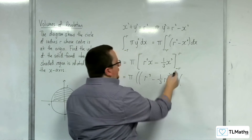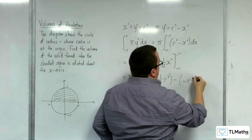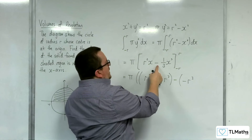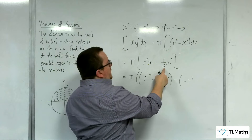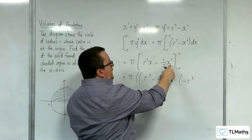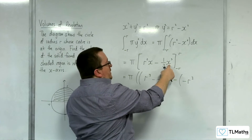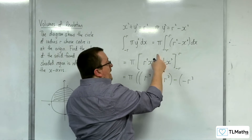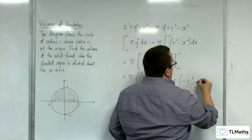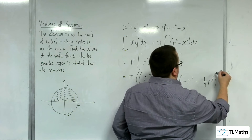Now substituting the lower limit minus r, we get minus r cubed, minus one third times minus r all cubed. Since minus r all cubed is minus r cubed, the two minuses cancel, giving plus one third r cubed.